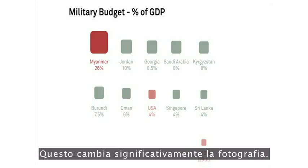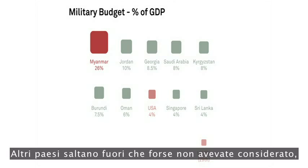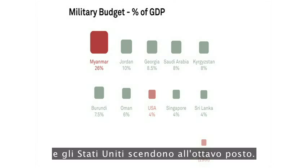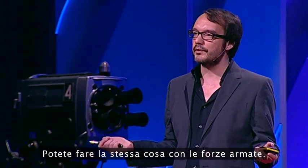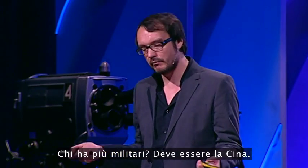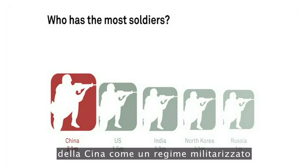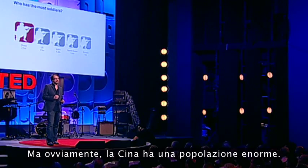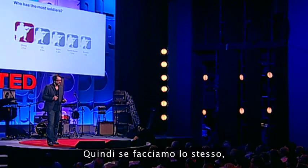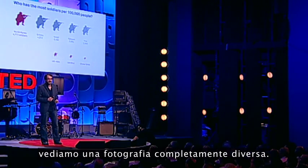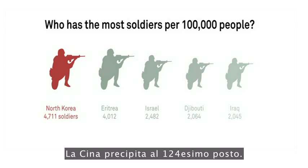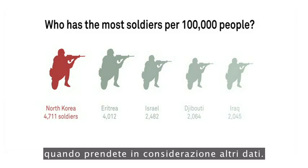Let's have a look. That changes the picture considerably. Other countries pop into view that you perhaps weren't considering, and America drops into eighth. And you can also do this with soldiers. Who has the most soldiers? It's got to be China — 2.1 million. But of course, China has an enormous population. So if we do the same, we see a radically different picture. China drops to 124th — it actually has a tiny army when you take other data into consideration.